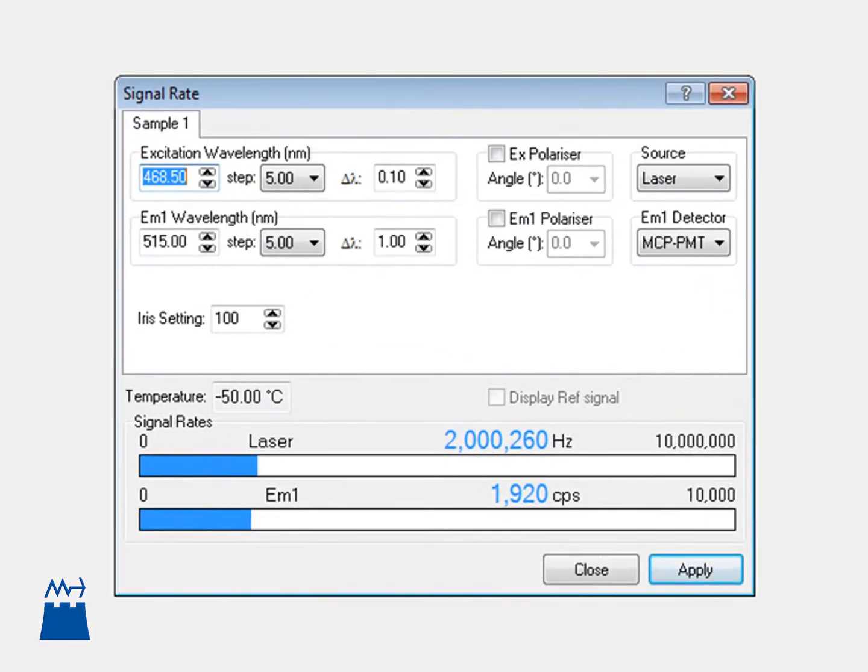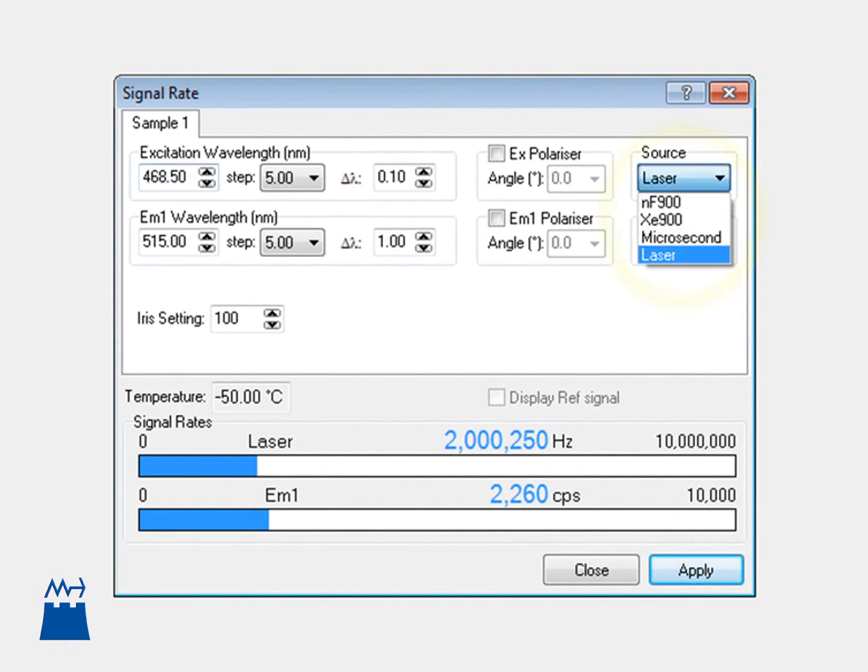For example, a signal rate screen allows the user to choose between the excitation sources, the monochrometer's excitation and emission wavelengths, their bandpasses, the detectors, as well as an iris.